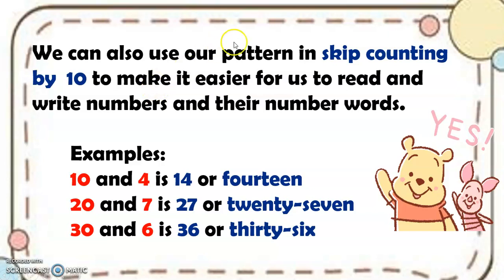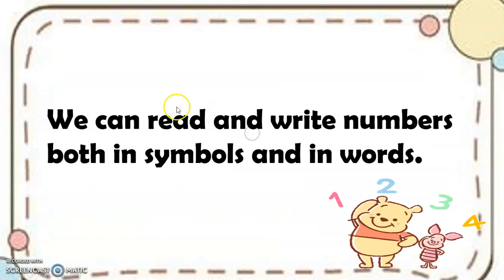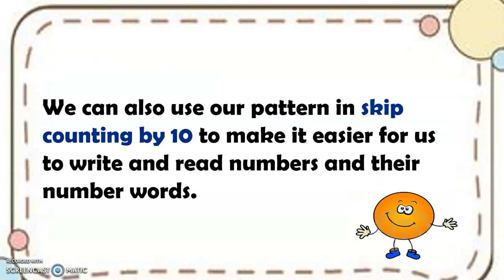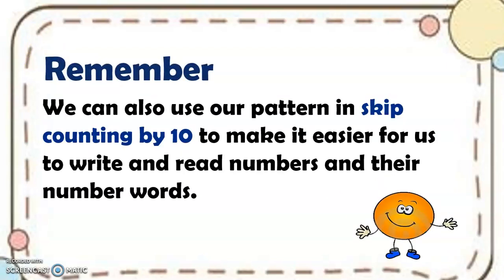Now, we can also use our pattern in skip counting by 10 to make it easier for us to read and write numbers in their number words. For example, we have 10 and 4 — it is 14. Then we have 20 and 7, so this is the number symbol for 27 and this is the number word for 27. And 30 and 6 is 36, or the number word thirty-six. We can read and write numbers both in symbols and in words.